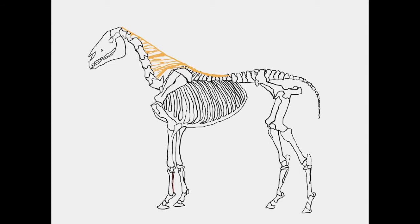Our first muscle that we're going to take a look at is brachiocephalicus, and it is comprised of two muscles: cleidocephalicus and cleidobrachialis.